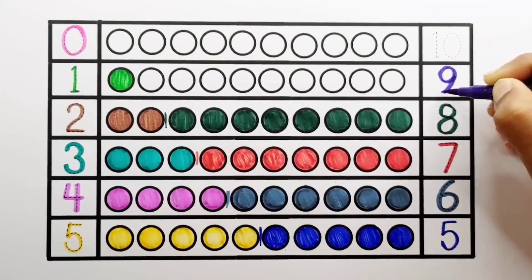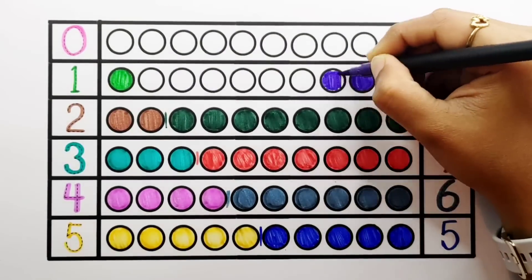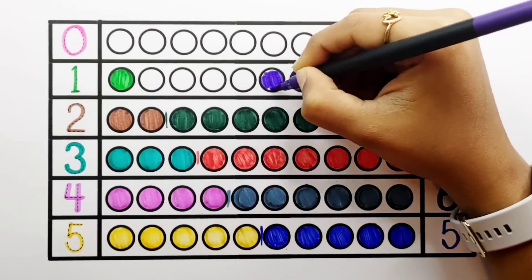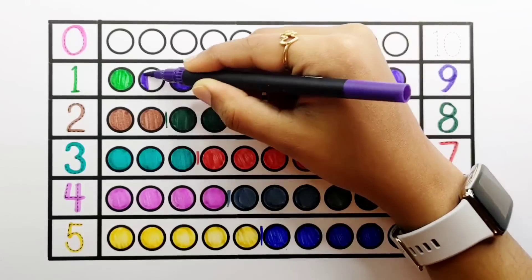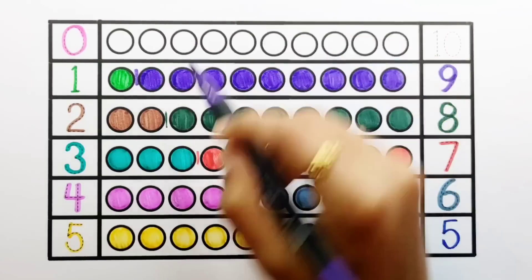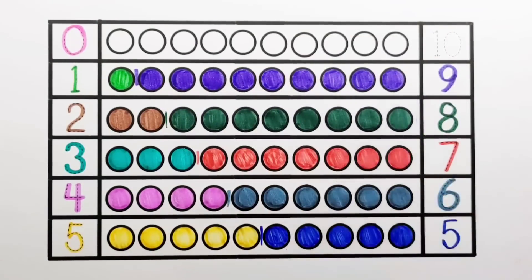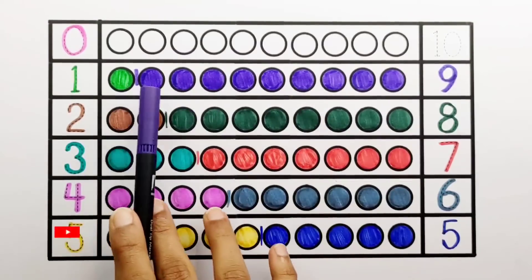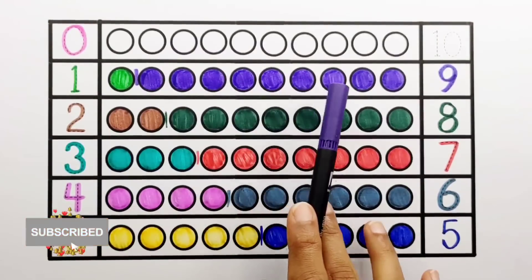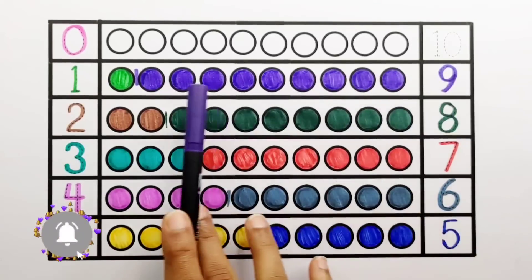Number 9. 1, 2, 3, 4, 5, 6, 7, 8, 9 — 9 balls. 1 plus 9 makes 10. 1, 2, 3, 4, 5, 6, 7, 8, 9, 10. 1 plus 9 equals 10.